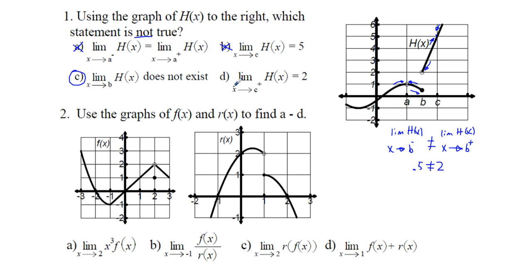And then finally, choice d, the limit as x approaches c from the right side is 2. Well, yeah, we already, this side is true, right? The limit as x approaches c from the right side is true. That's not right. So the one that's not true is answer choice c.